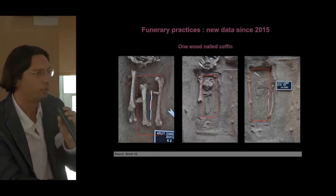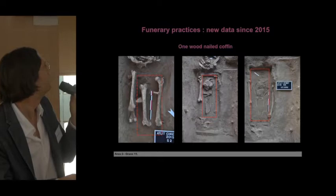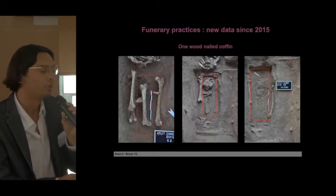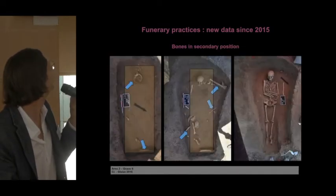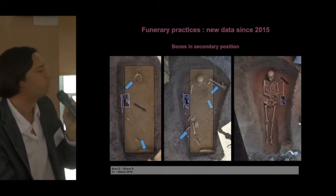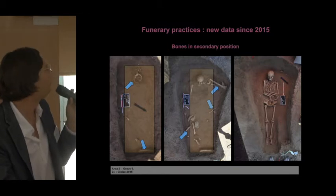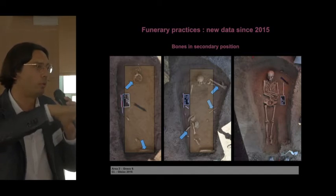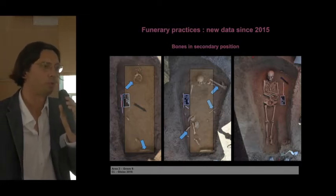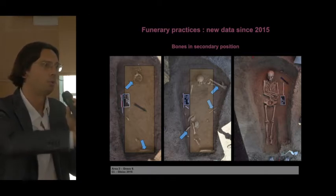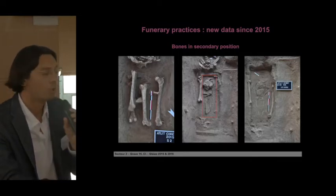We found one wood coffin — we found the nails. We could delimit the grave, and we found two babies in the same wood coffin. We analyzed all the bones in secondary position. When we found several bones, often the large bones were on top of the wood cover — placed directly on it or around the coffin.